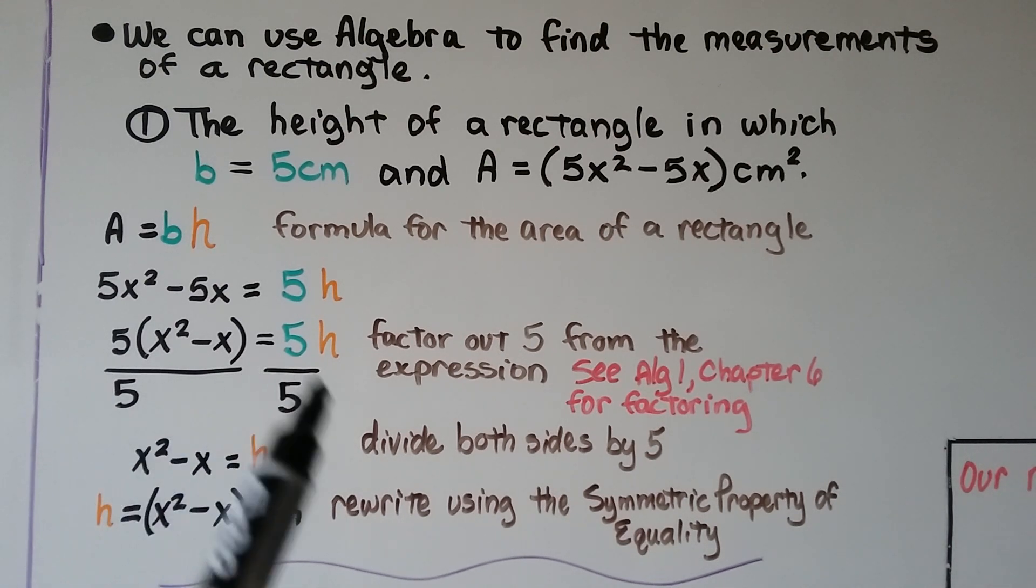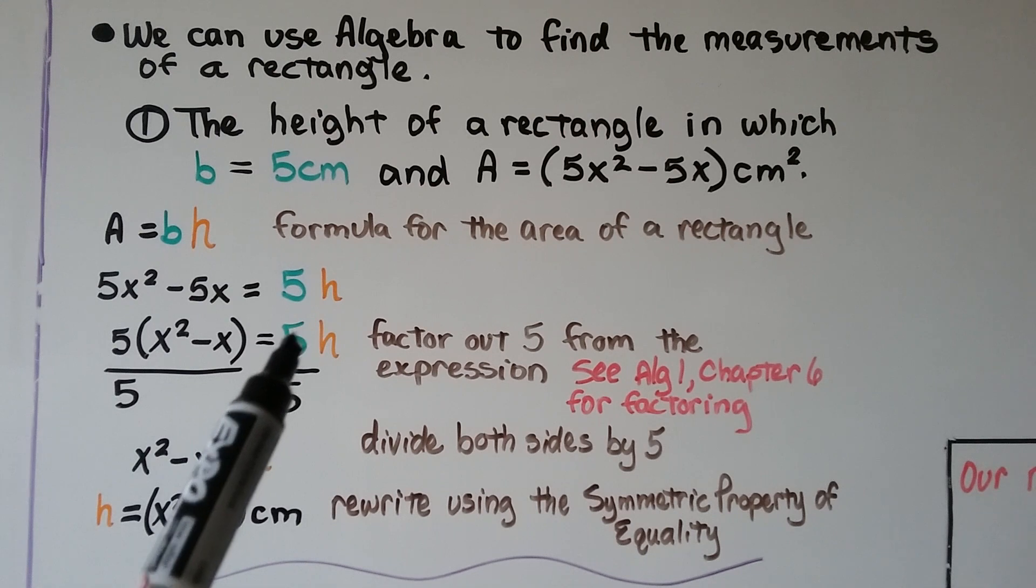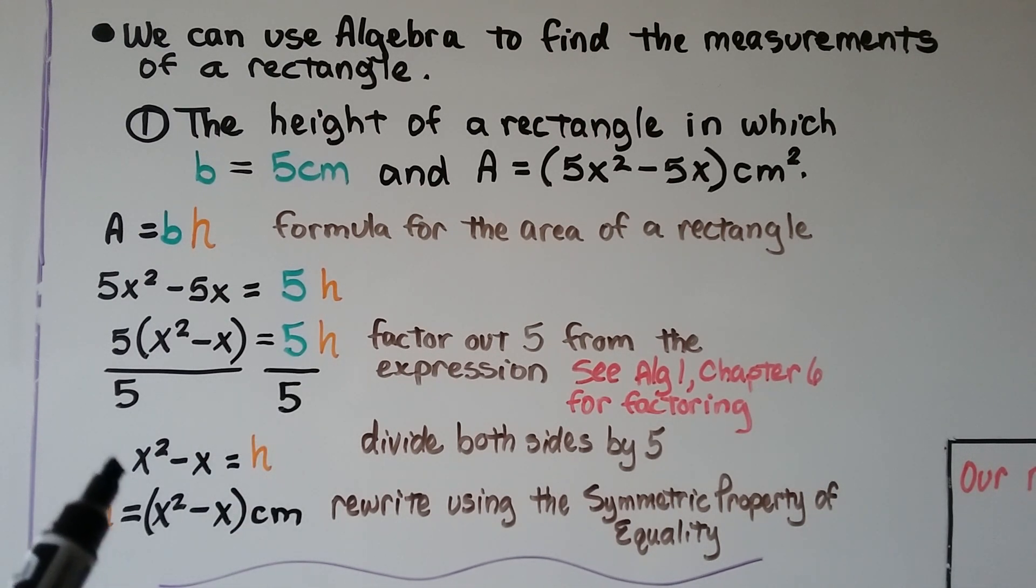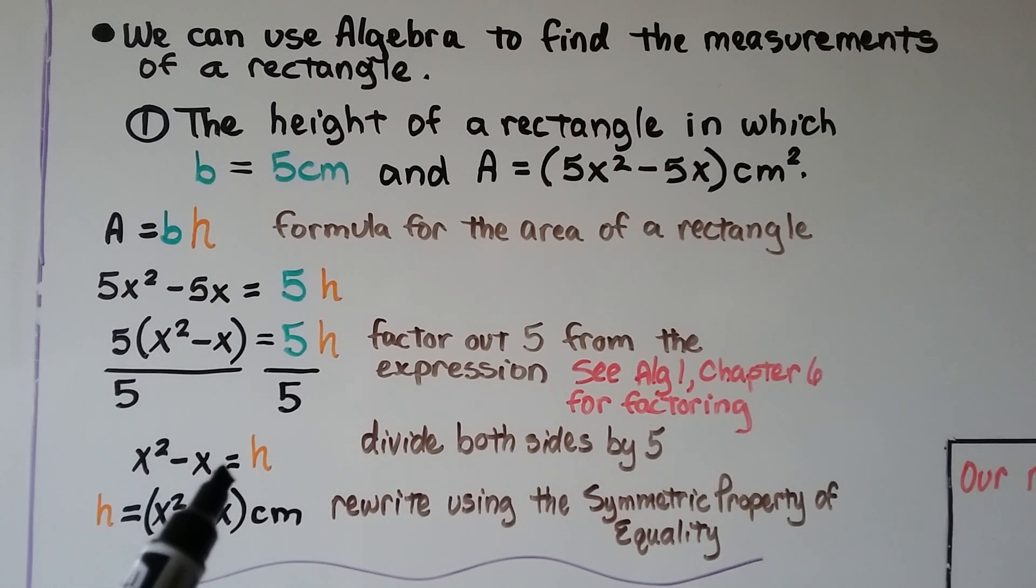So now we can divide both sides by this coefficient 5. And we get 1h. And we have x squared minus x equals h. And we can rewrite it using the symmetric property of equality. So we can flip it around and put the h on this side equals x squared minus x centimeters.